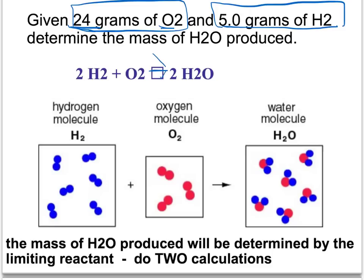And once again, remember this arrow should be there where the box is. So to determine the mass, this is what we did yesterday, of water produced. We simply do two calculations and the smallest amount is the amount that is actually produced.